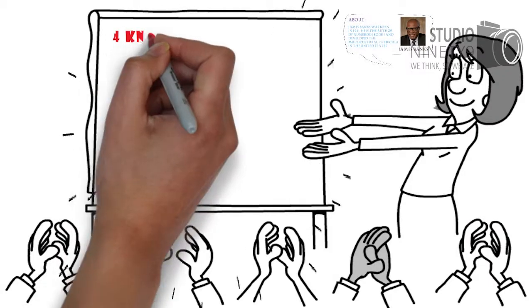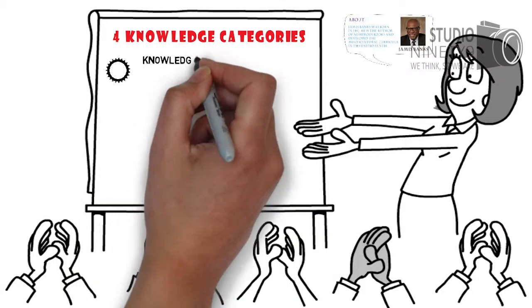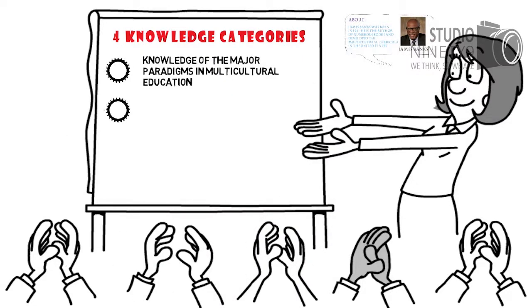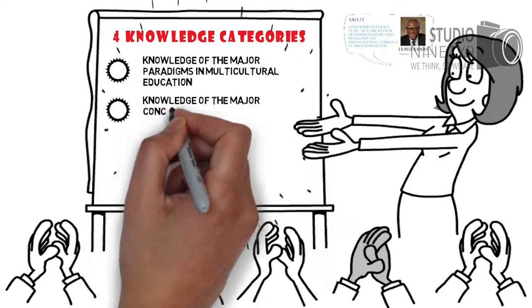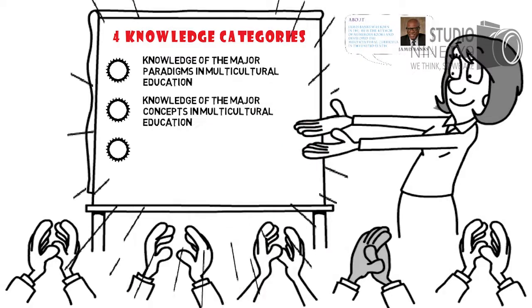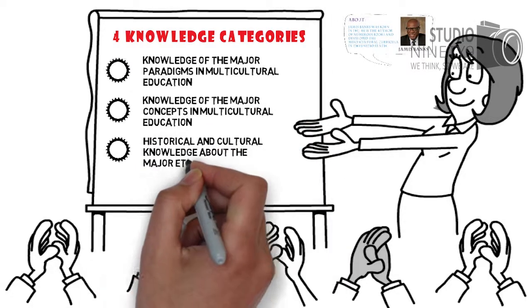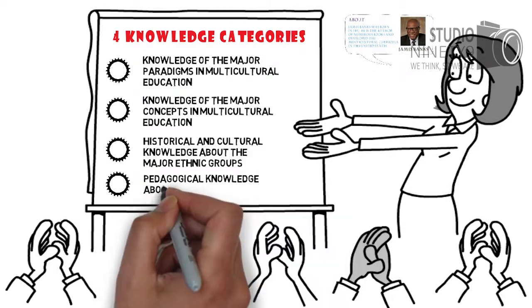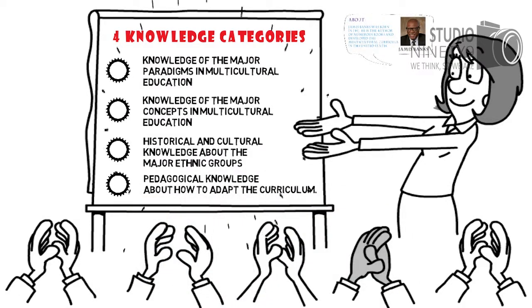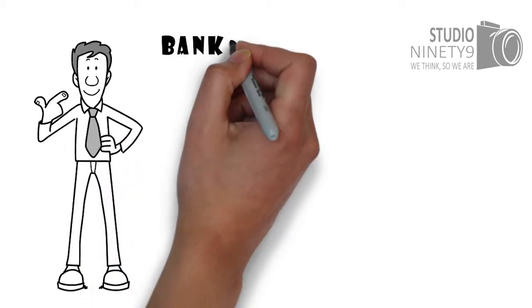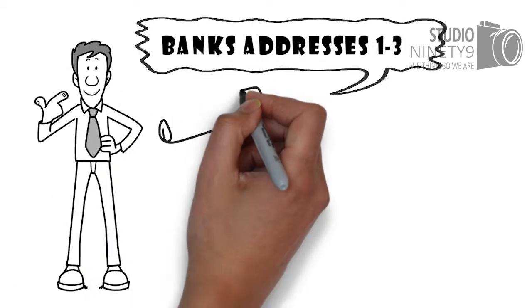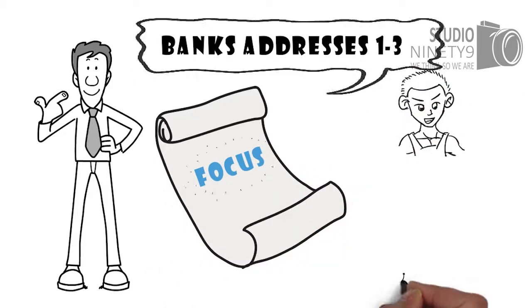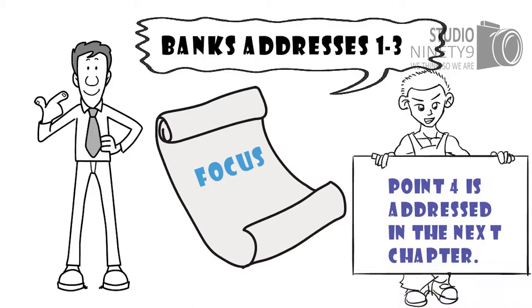There are four knowledge categories. First, knowledge of the major paradigms in multicultural education. Second, knowledge of the major concepts in multicultural education. Third, historical and cultural knowledge about the major ethnic groups. And fourth, pedagogical knowledge about how to adapt the curriculum. Banks addresses categories one through three in this chapter, which is the hard core of his cultural competence focus. Point four is addressed in his next chapter.